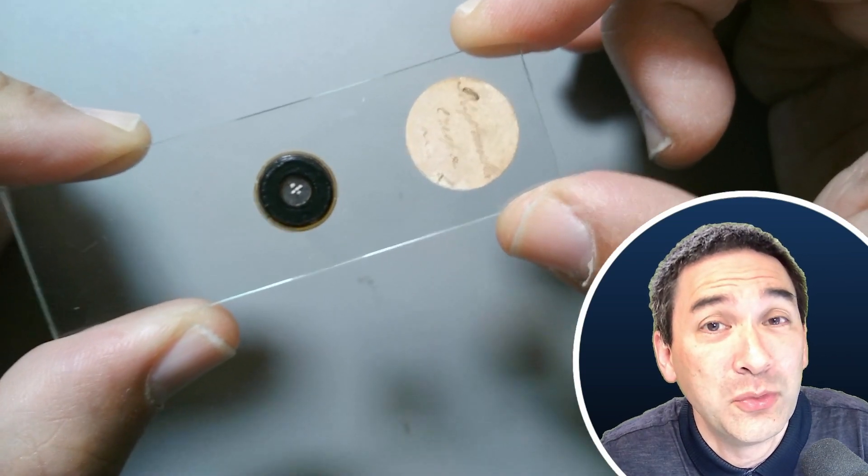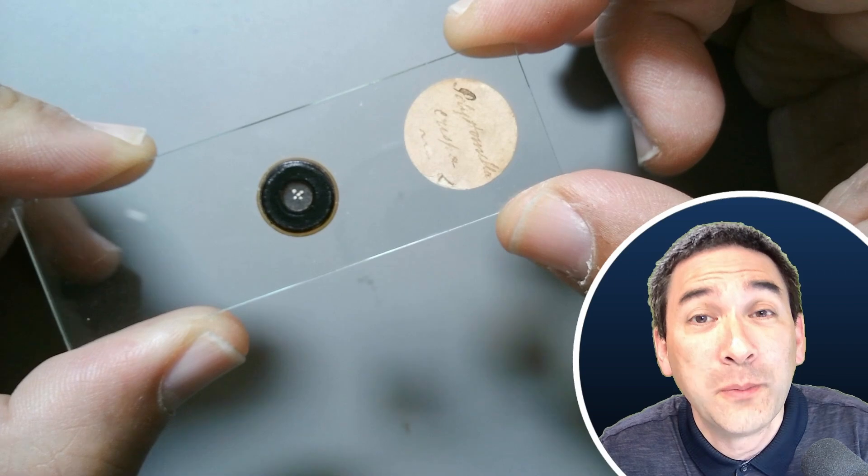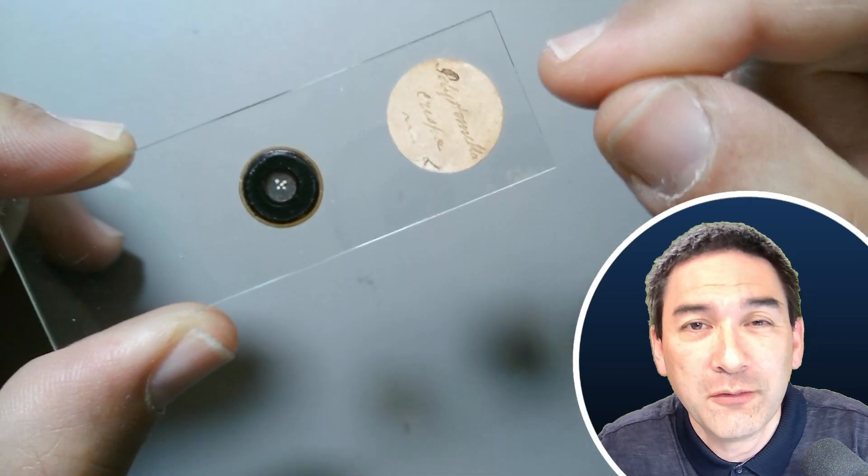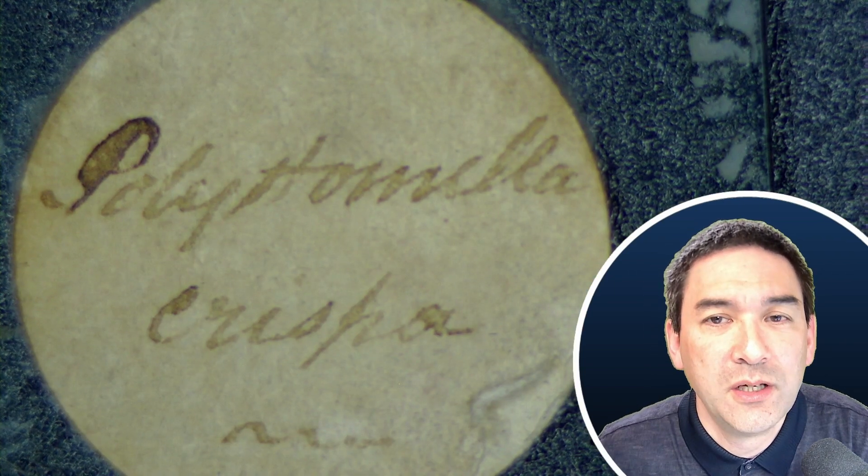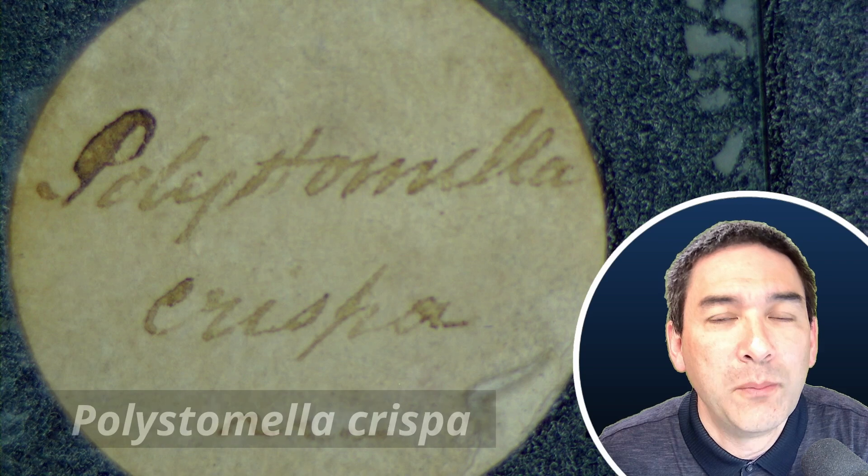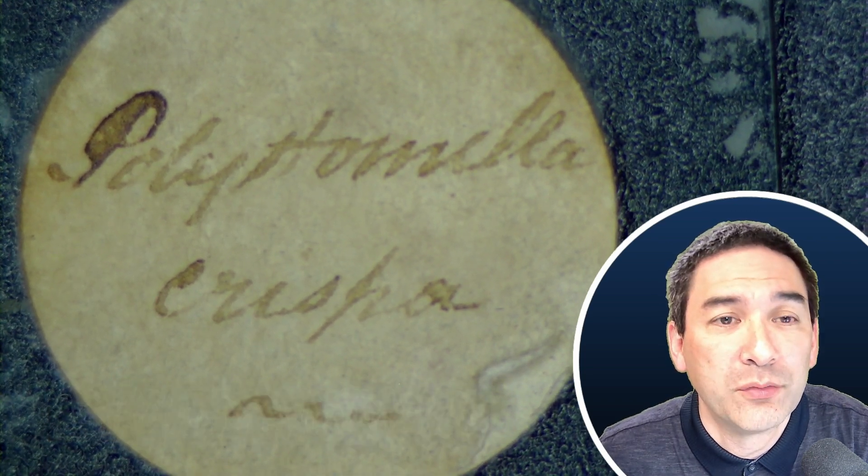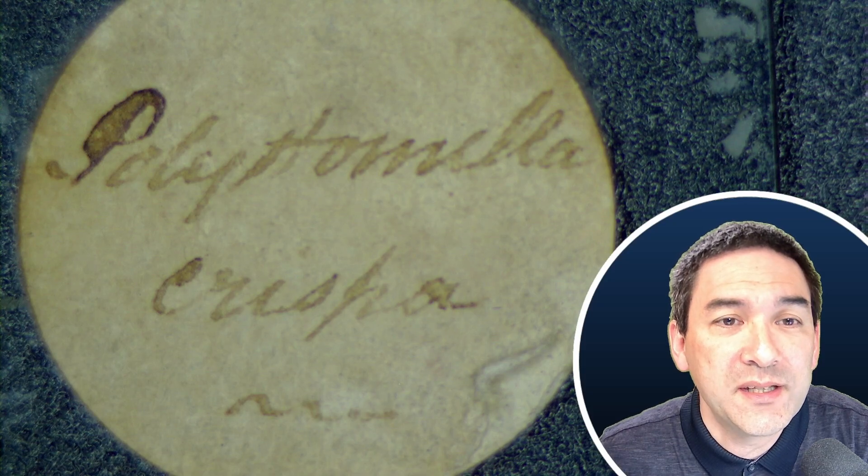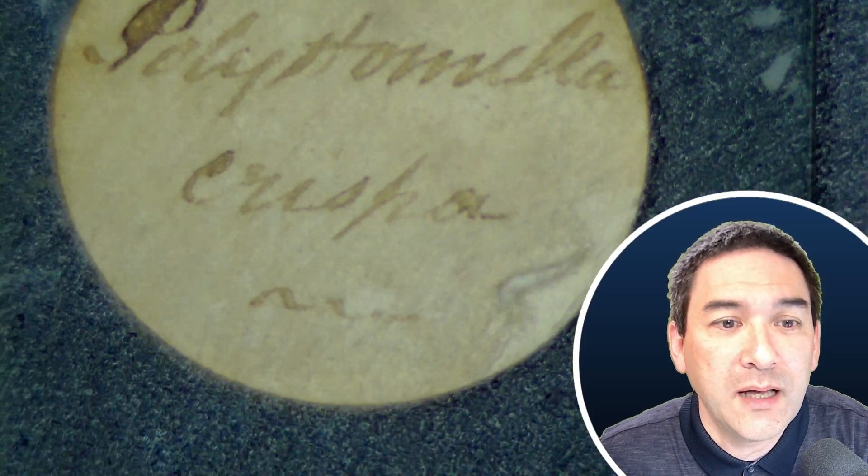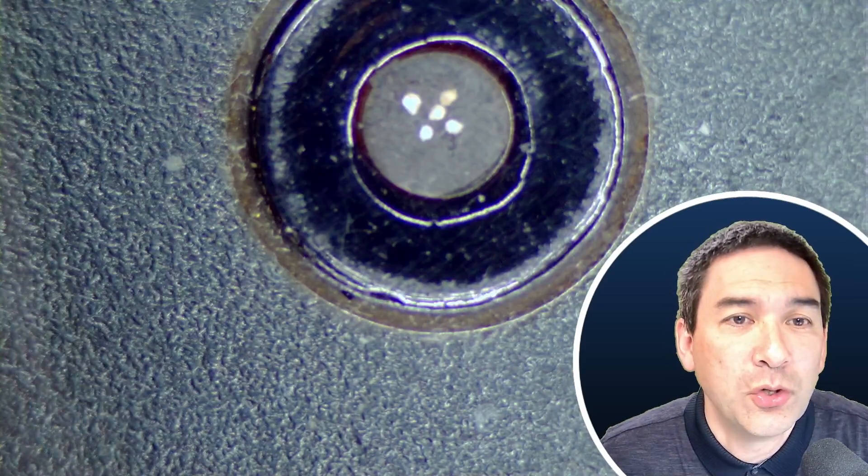This is a beautiful example to observe using my stereo microscope, and that's what I'm going to do next. But let's have a look at the slide label first. So here we go. Polystromella crispa. Indeed, this is an organism that I found also when I did a little bit of research. And now let's put the actual specimen under the microscope. Here it is.